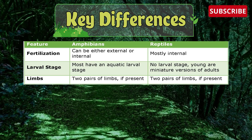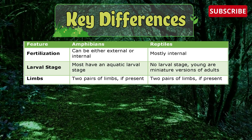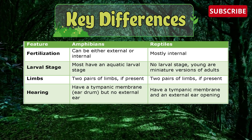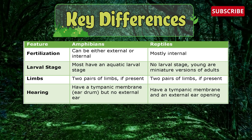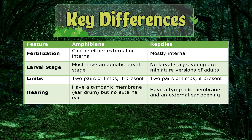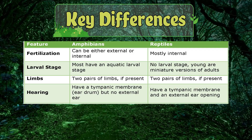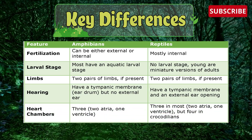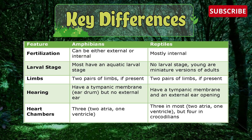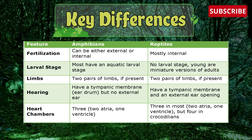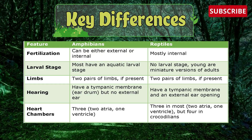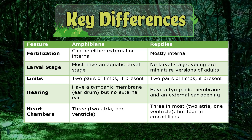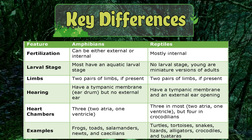Both amphibians and reptiles have two pairs of limbs if present. Amphibians have a tympanic membrane (eardrum) but no external ear, whereas reptiles also have a tympanic membrane and an external ear opening. Heart chambers in amphibians number three — two atria and one ventricle — whereas in reptiles it is also three in most cases, but four in crocodilians.